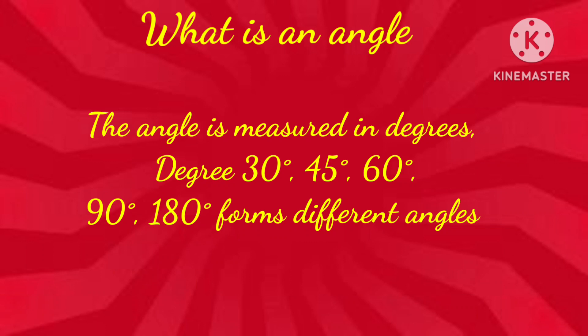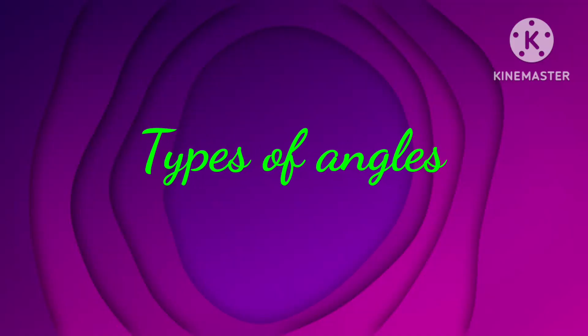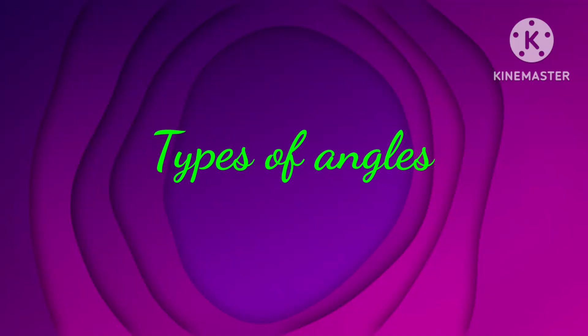Angles can measure 30 degrees, 45 degrees, 60 degrees, 90 degrees, or 180 degrees, forming different angles. Now let's see what the different types of angles are.